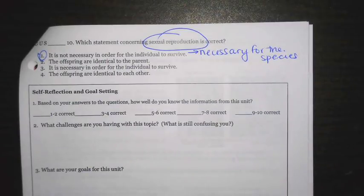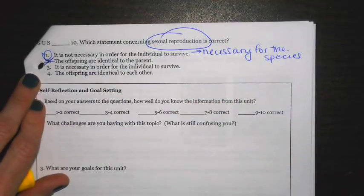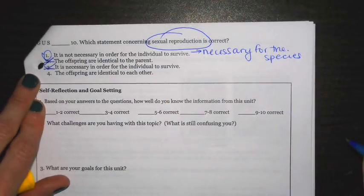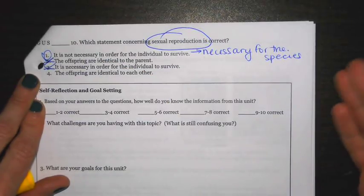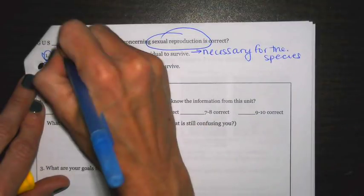Number two says, the offspring are identical to the parent. Well, that's definitely false because sexual is all about variation. Three says, necessary for individual to survive. That's definitely false. And finally, the offspring are identical to each other. Now, if you have siblings, most likely you are not identical to your siblings. So we can cross that one off.